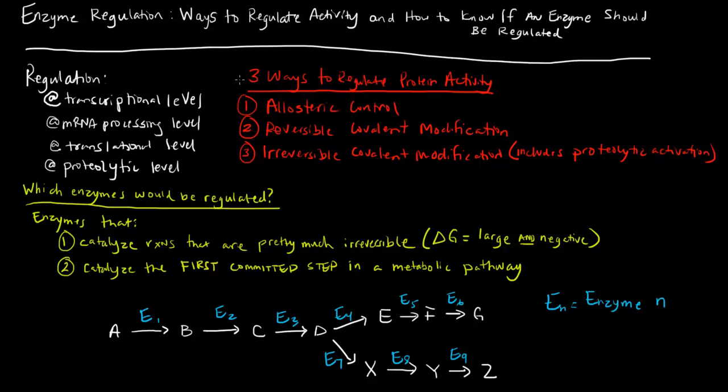There are different levels of regulation. Remember that enzymes are proteins. If you recall the central dogma, proteins come from DNA. DNA is transcribed into mRNA and mRNA is translated into proteins. How much of a protein or enzyme is made can be regulated based on how much is transcribed, how the mRNA is processed, how much is translated, and proteolysis, which is the breaking up of a protein. At all these different levels, we can have regulation of how much enzyme is even created. I'm not going to talk too much about this.